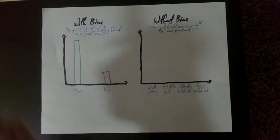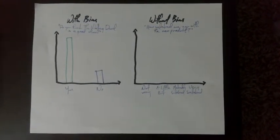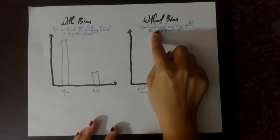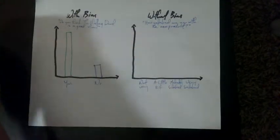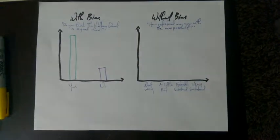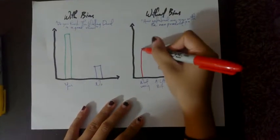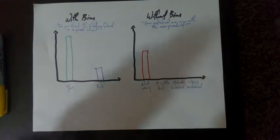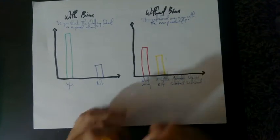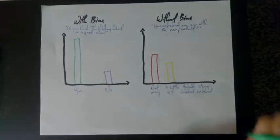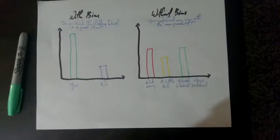On the other hand, there might be someone who got a better sample and asked how satisfied someone was with a new product. Let's say the product was actually really bad and the sample was very unbiased. So the graph would look more realistic and more accurately depict what the sample believed or felt about the product.